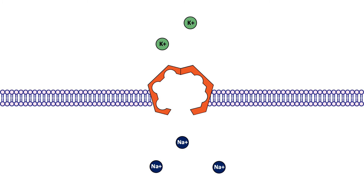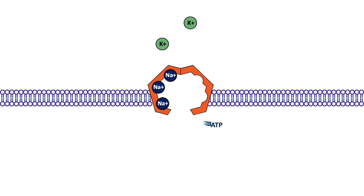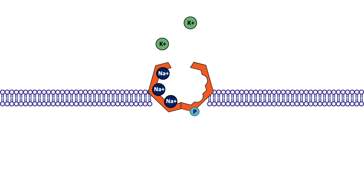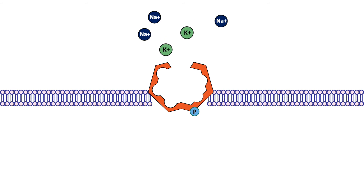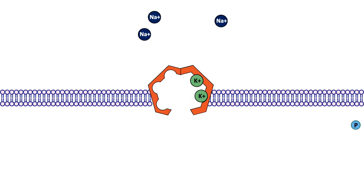Three intracellular sodium ions enter the pump. ATP is converted to ADP, which leads to a conformational change of the protein, closing the intracellular side and opening the extracellular side. The sodium ions leave the pump while two extracellular potassium ions enter. The attached phosphate molecule then leaves, causing the pump to again open toward the inside of the neuron. The potassium ions leave and the cycle begins again.